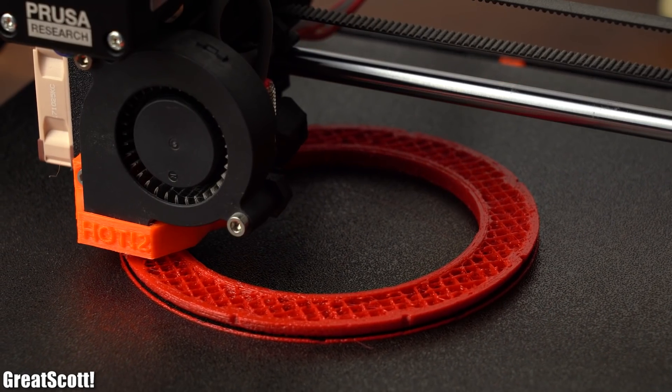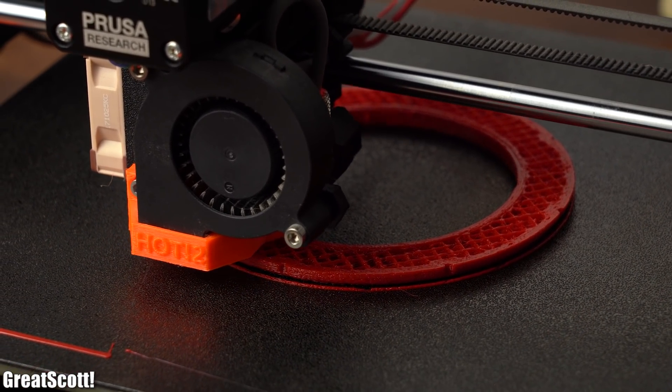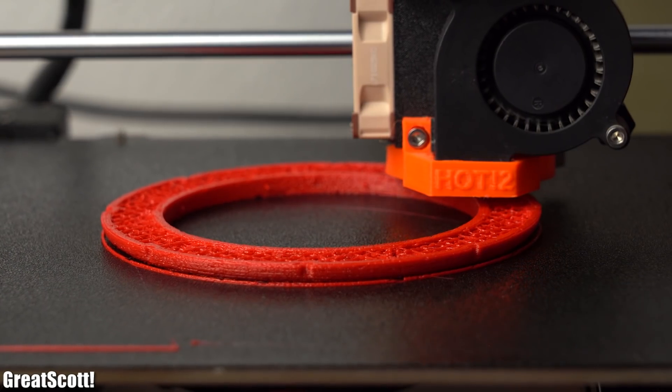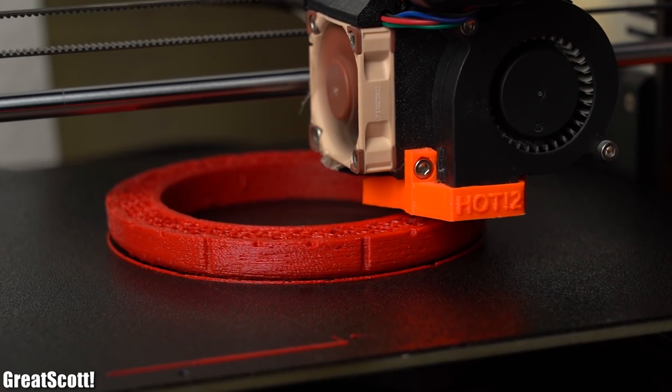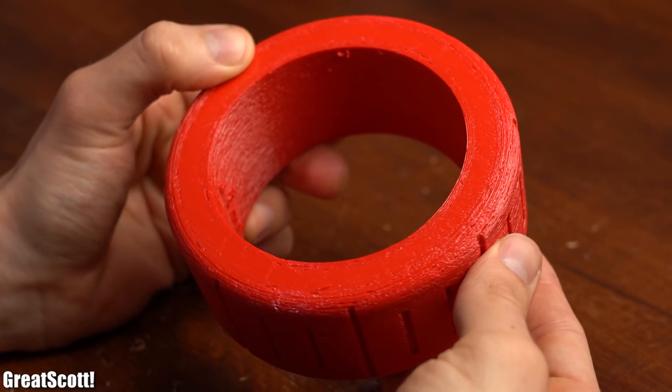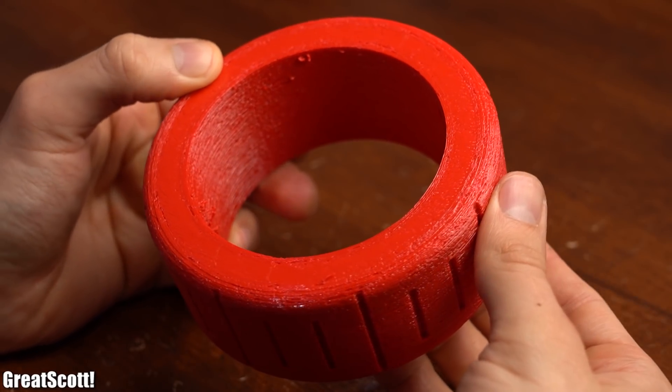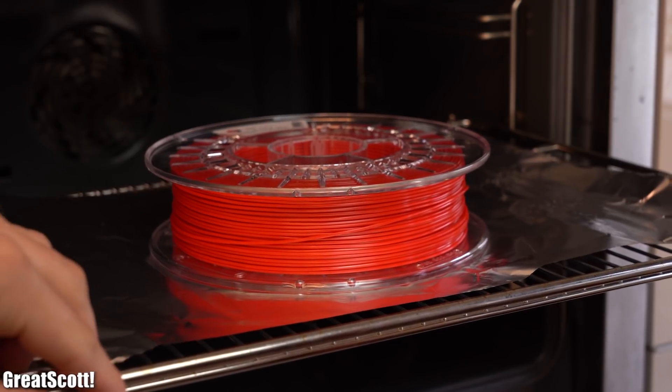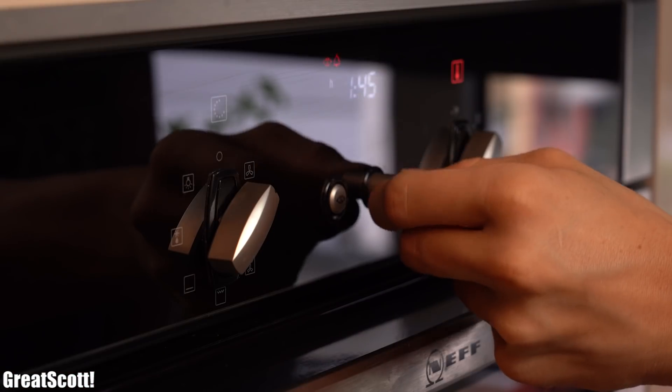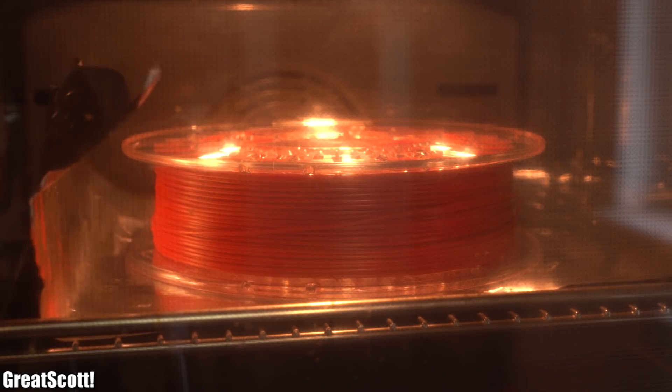As you can see the filament did not extrude continuously and I could hear water vaporizing which means that the filament was simply too moist. So after 22 hours of printing the first tire did come out successfully but certainly not with the best quality. That is why I threw the filament roll into my oven and let it bake at 50 degrees Celsius for 3 hours in order to remove the moisture.